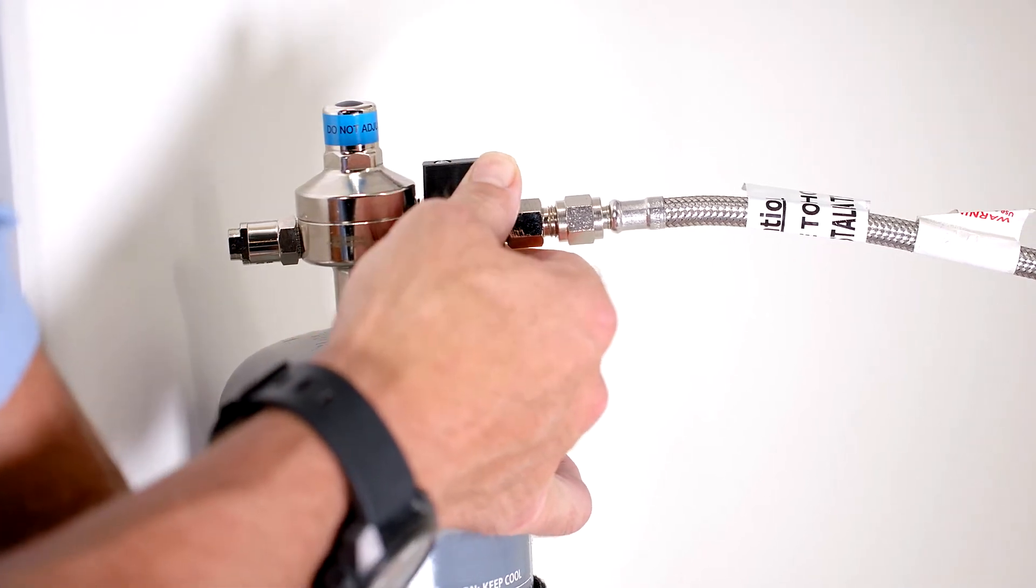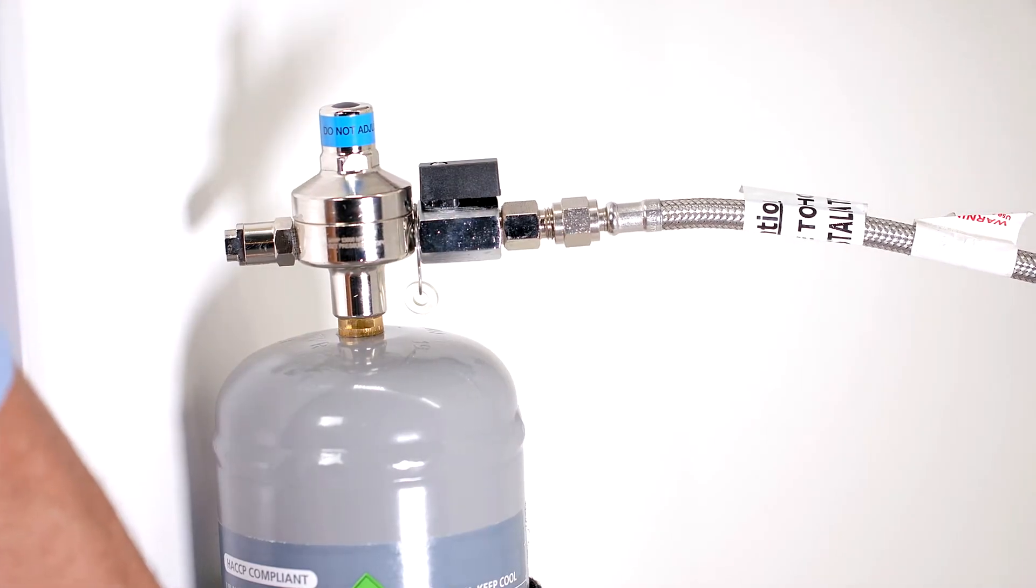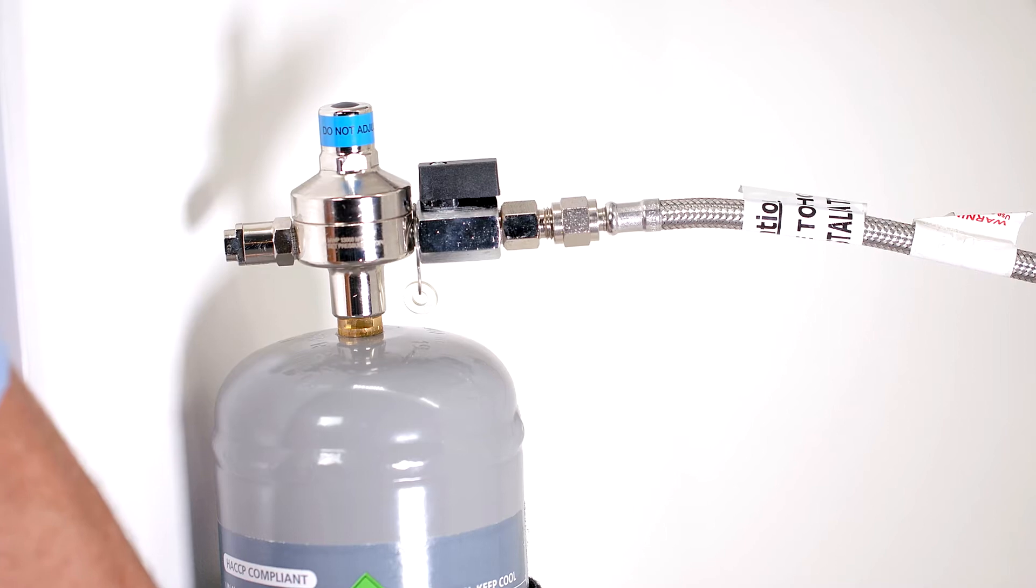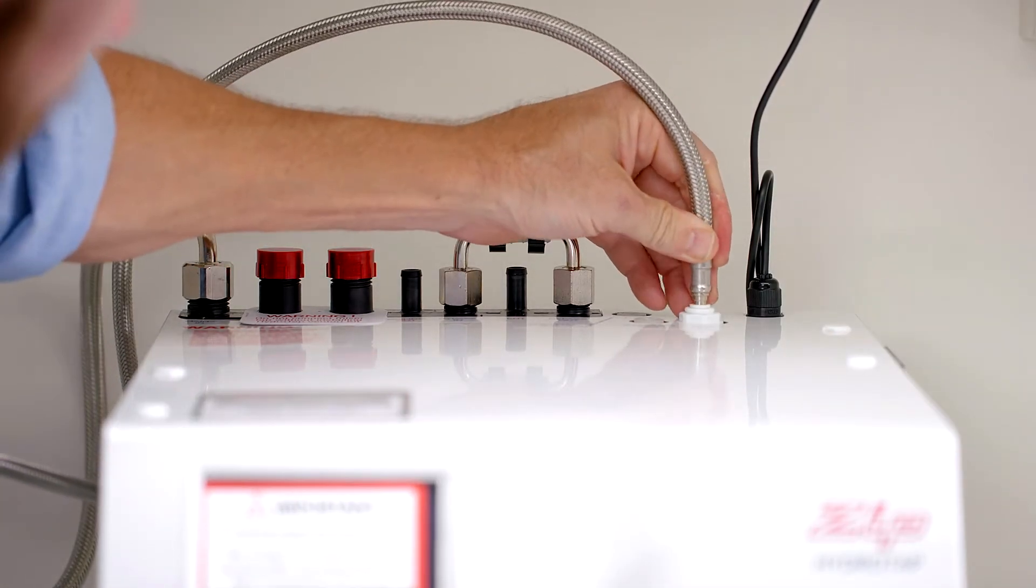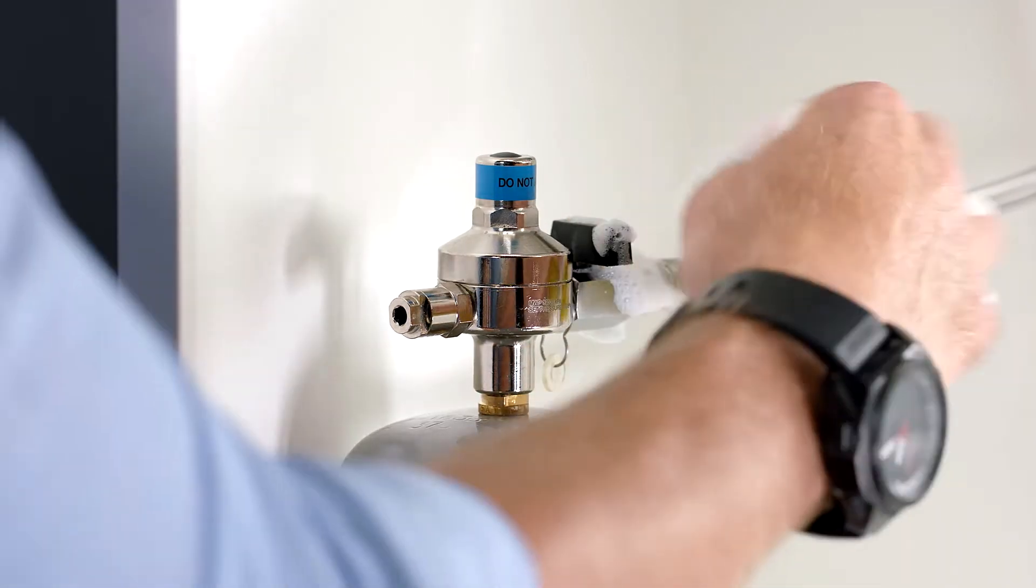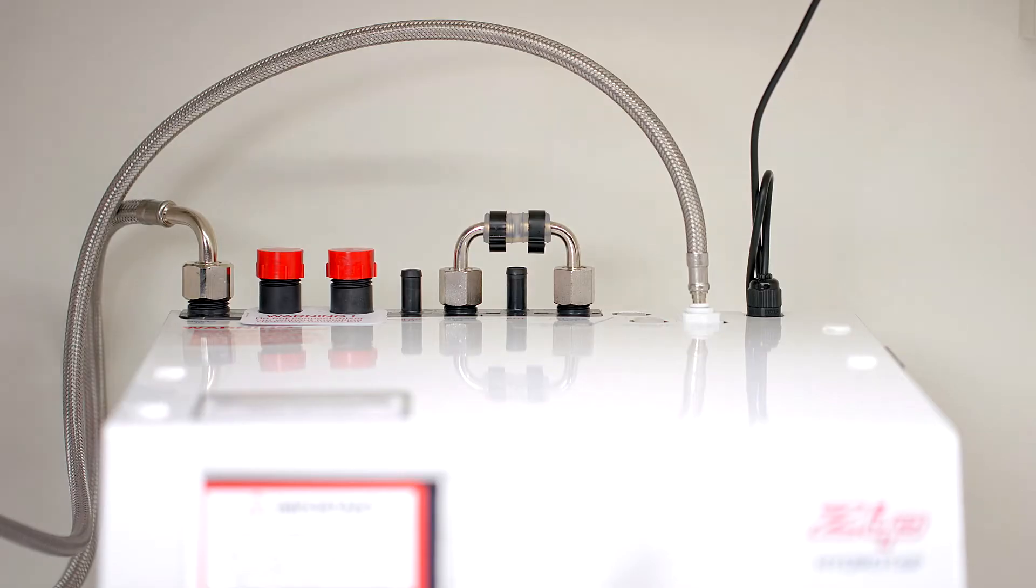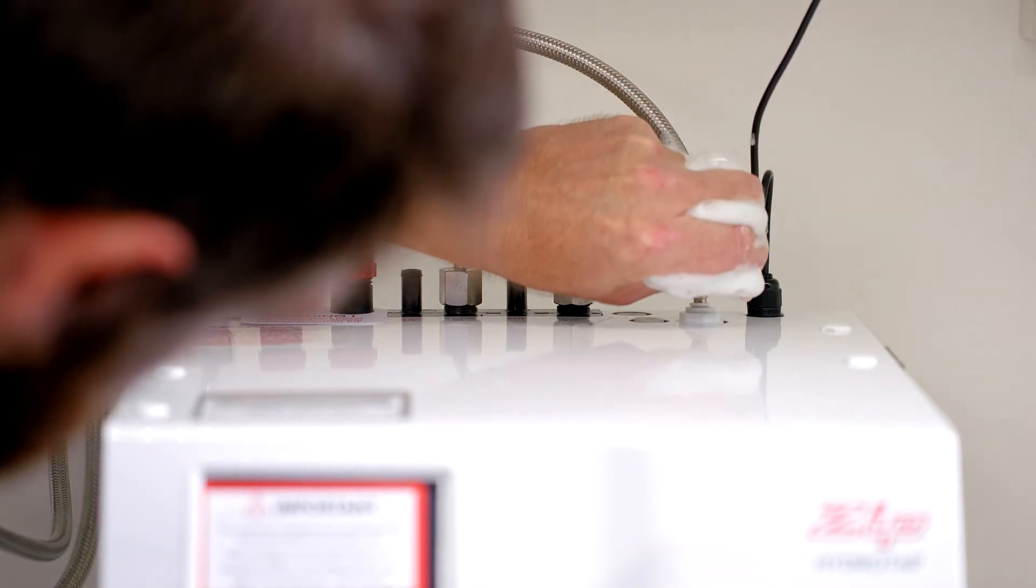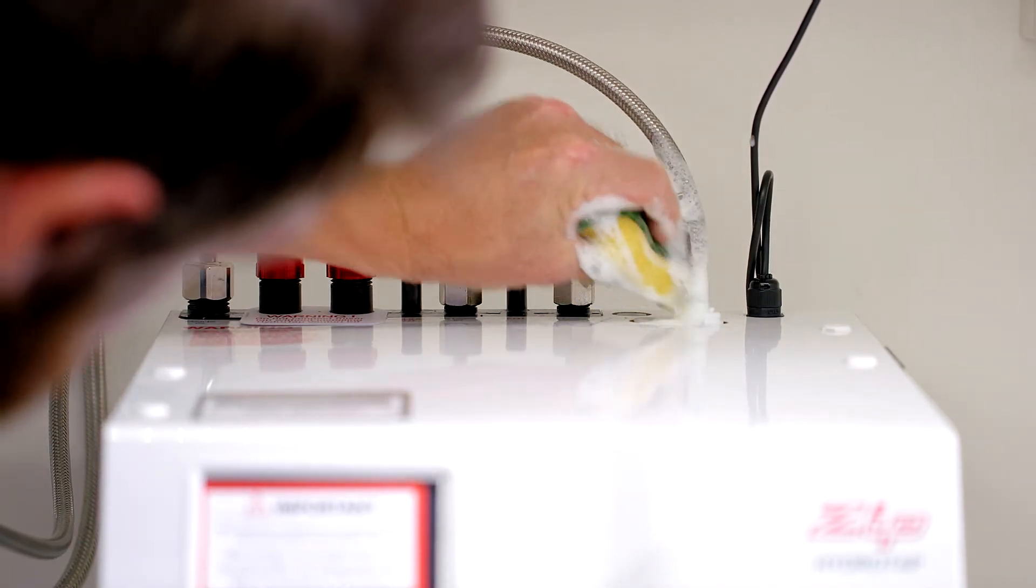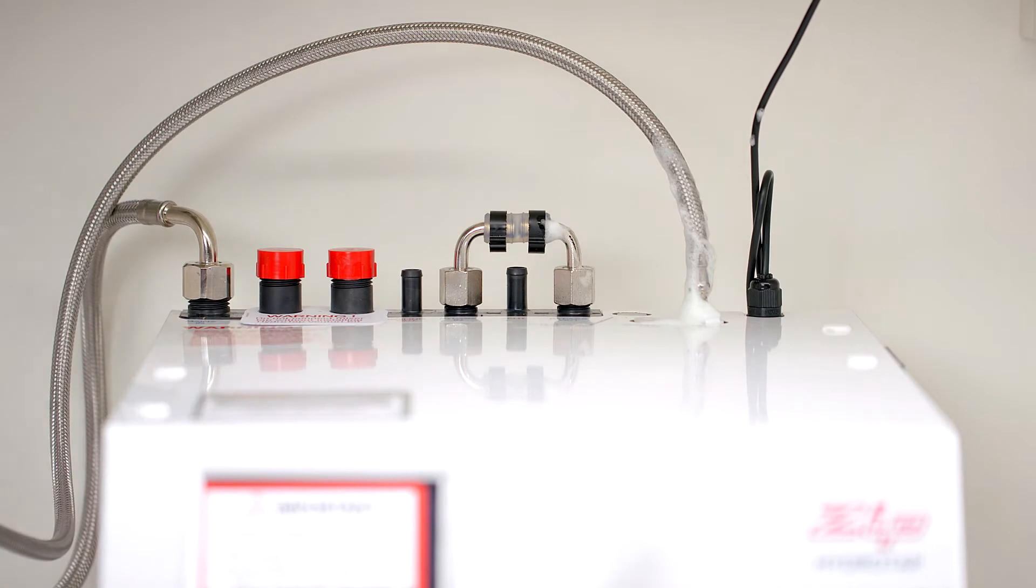Once you've connected the CO2 bottle to the command center it's time to turn on your CO2 bottle and check for leaks. Turn on the CO2 regulator and to check for leaks just take a sponge and some soapy water and dab the soap suds around the connections you've made on the regulator and the command center. If you see any bubbles appearing just tighten up your connections.